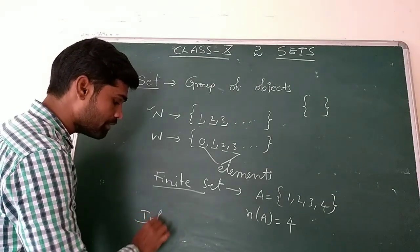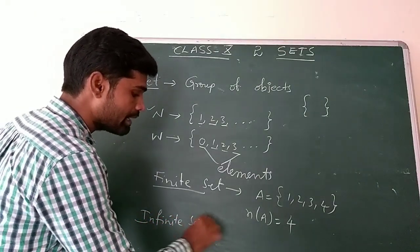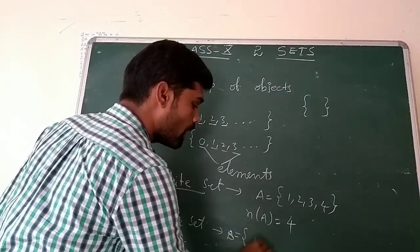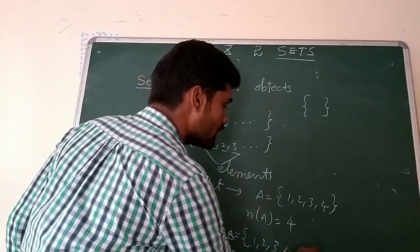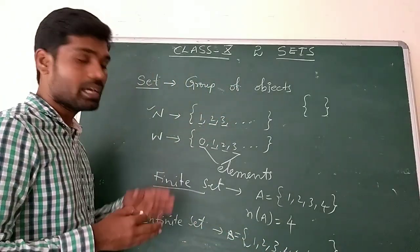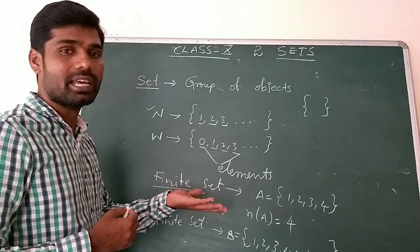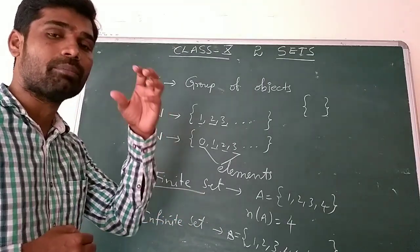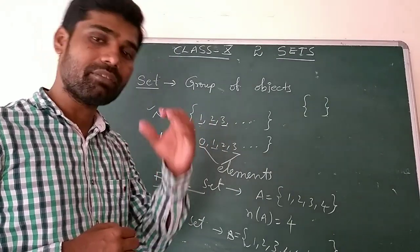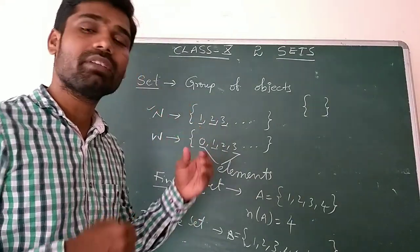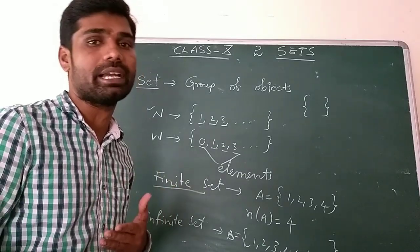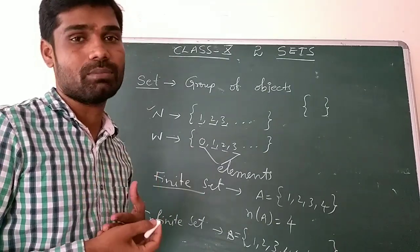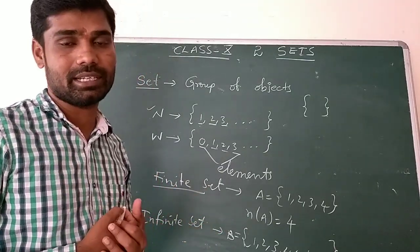An infinite set is one where we cannot count the elements. For example, B = {1, 2, 3, 4, ...} — with so on and so on, we cannot say how many elements there are. So where we can count the elements, it is a finite set; where we cannot count, it is an infinite set.